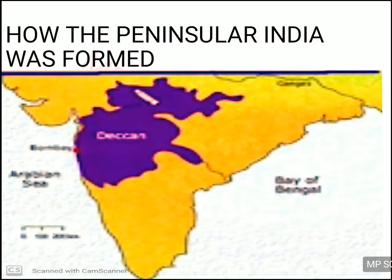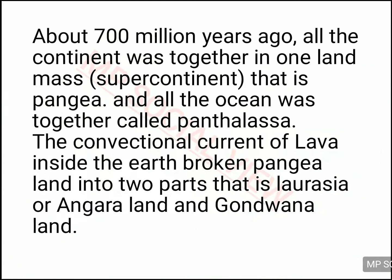Let's see how this irregular triangular peninsular plateau was formed — it's really interesting. It was formed long, long back, about 700 million years ago. All the continents of the world were together — there were no separate continents earlier. All the continents were together into one landmass, and that landmass was called a supercontinent. That supercontinent's name was Pangaea. All the seven continents which you see were once a single landmass called Pangaea. All the oceans which you see today were also together and called Pantalasa.